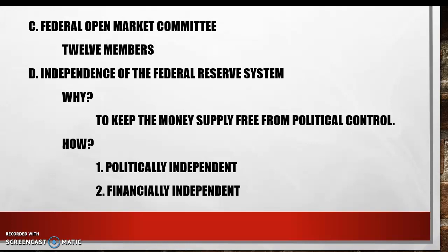A third way it maintains independence is that it operates independently. Though Congress requires the chair of the Board of Governors to report to it periodically, no one may dictate what actions the Federal Reserve System must take. The Fed's financial records are exempt from audit by any agency or agent — no one may examine the Fed's books without its permission.